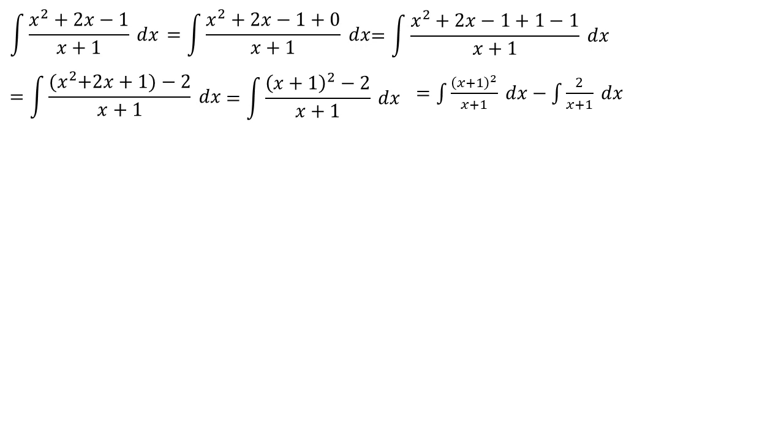And we get the integral of x plus 1 close bracket to the power of 2 over x plus 1 dx minus the integral of 2 over x plus 1 dx. This equation equals the integral of x plus 1 dx minus 2 times the integral of 1 over x plus 1 dx.